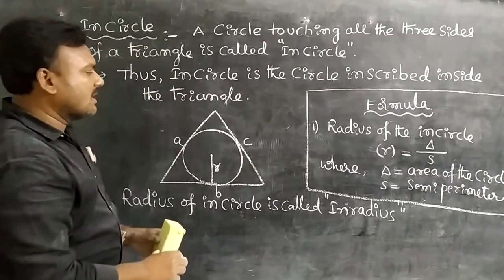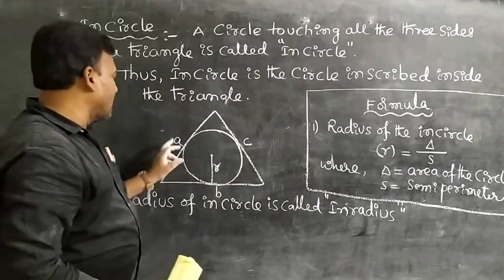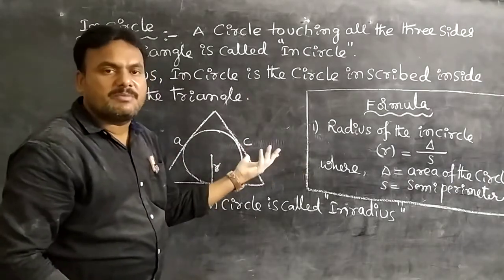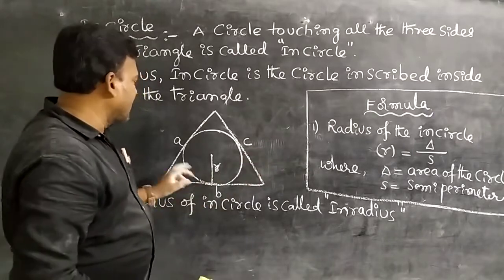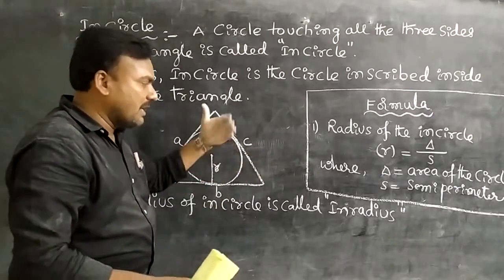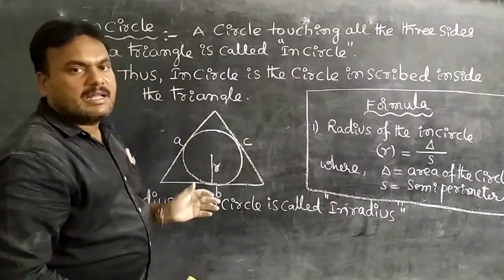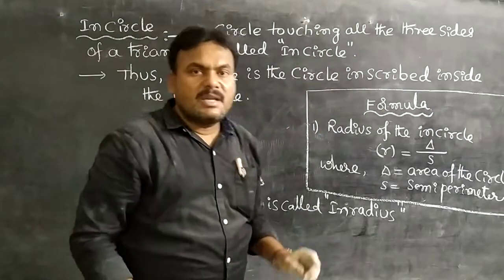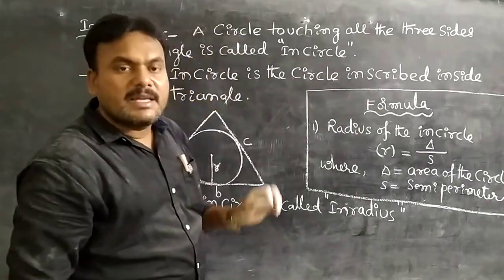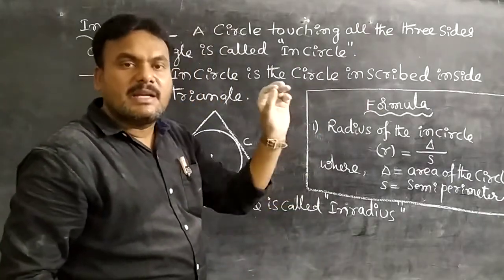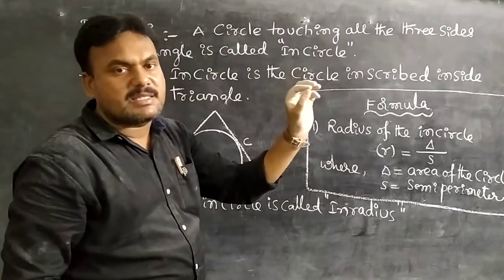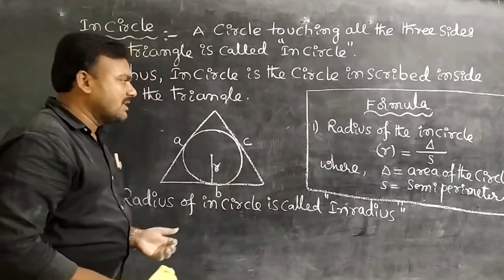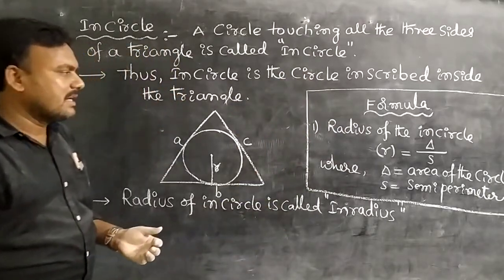The perimeter equals a + b + c. The semi-perimeter is half the perimeter: s = (a + b + c)/2. The area is given by Heron's formula: Δ = √(s(s−a)(s−b)(s−c)). That is the formula — don't forget it.